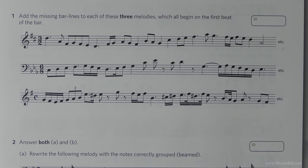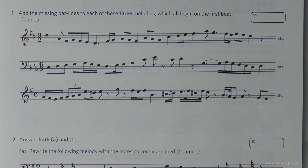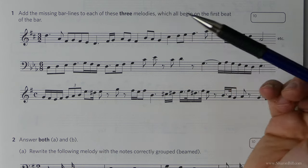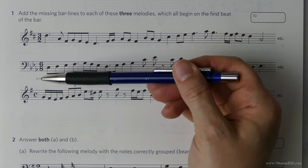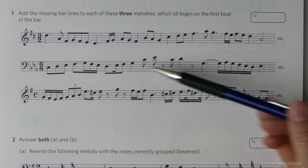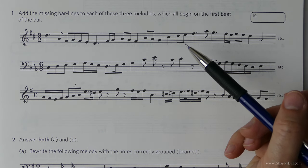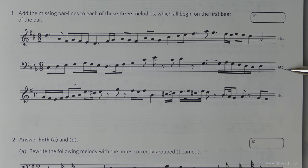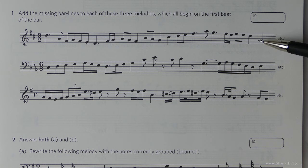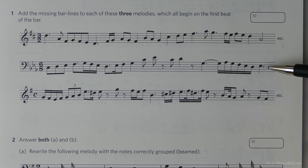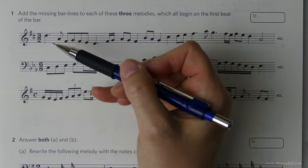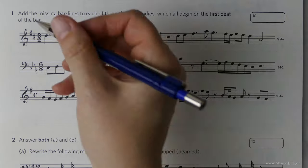Question one asks us to add the missing bar lines to each of these three melodies. There are three separate time signatures - don't just presume there's a continuation. They all begin on the first beat of the bar, but the 'etc.' means that the last bar won't be complete; it just finishes mid-bar. So you can't work backwards because this last bar won't be complete.